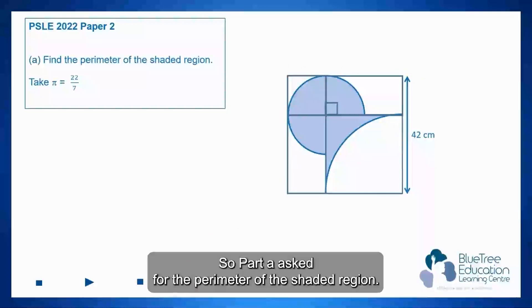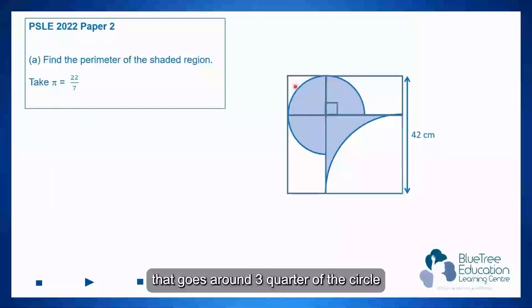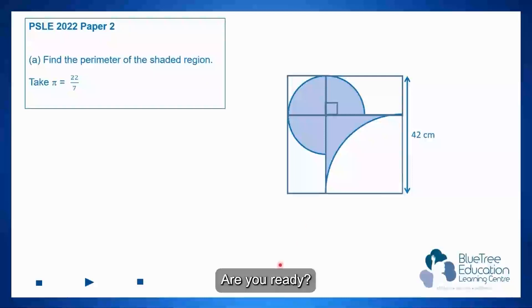So part (a) asks for the perimeter of the shaded region. So let me just walk my pointer around. We need to look for this arc line that goes around three-quarter of the circle and then there is a little short straight line over here and here and then the last final curve which is a big quarter arc. Are you ready? Let's see how we can solve this.